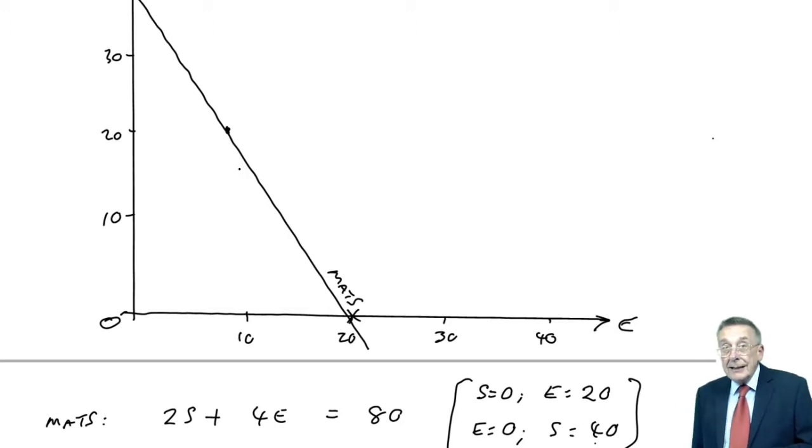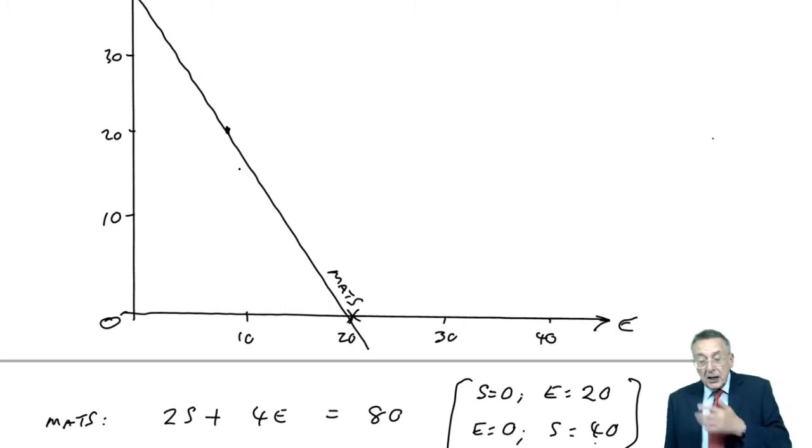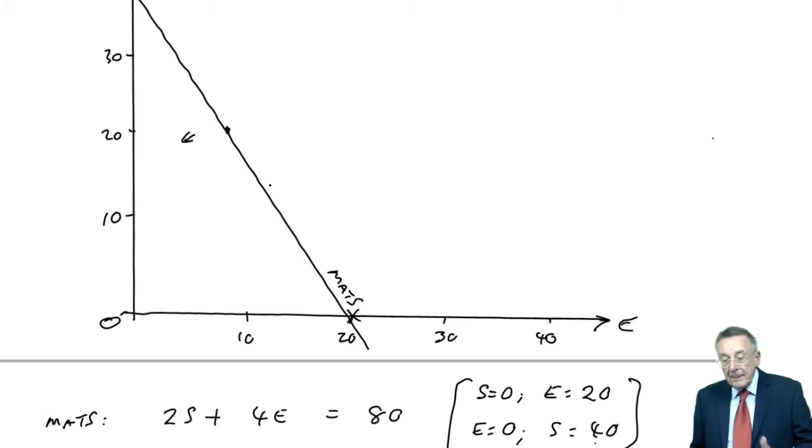However, the actual constraint was not that we had to use 80, but that was the maximum. We're going to use 80 or less. And so, any answer we end up with, S and E either have to lie on the line and we're using exactly 80, or, to be using less than 80, it'd be fewer S's or fewer E's, it'd be below the line.